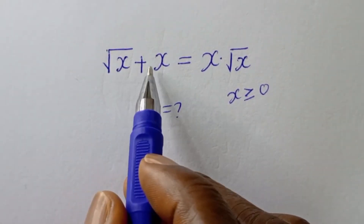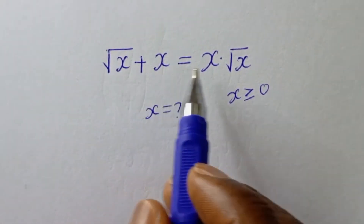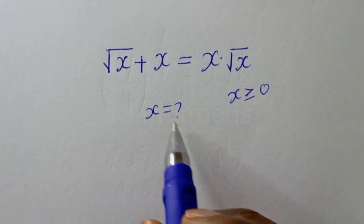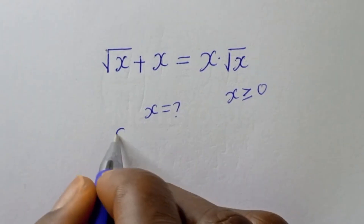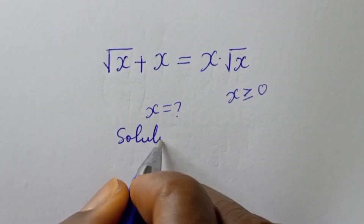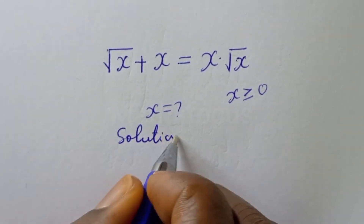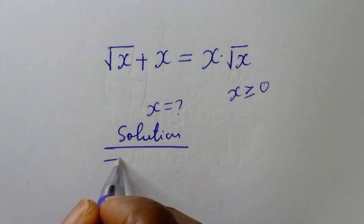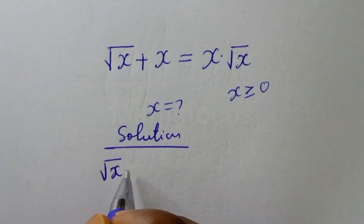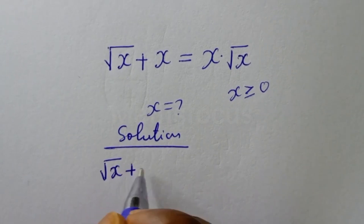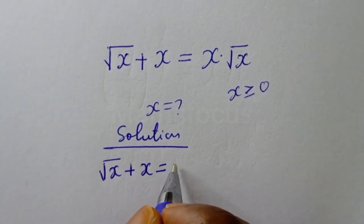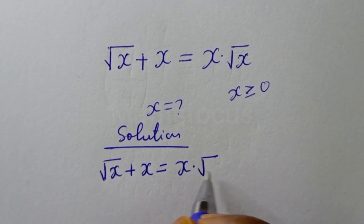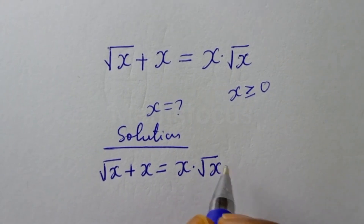Square root of s plus s is equal to s multiplied by square root of s. What is the value of s? We have square root of s plus s is equal to s multiplied by square root of s.